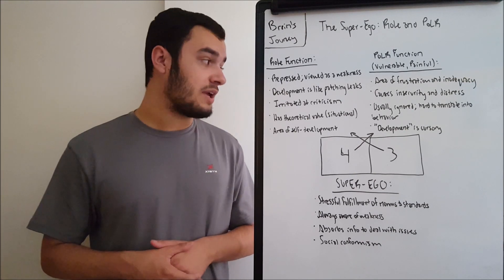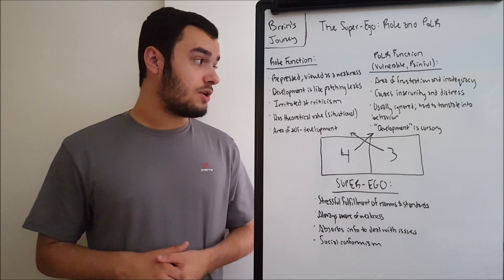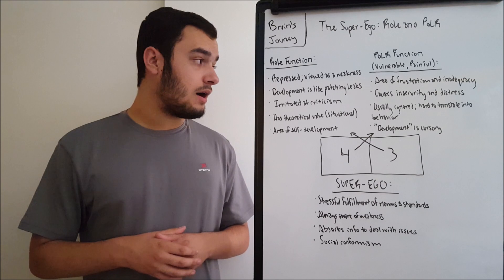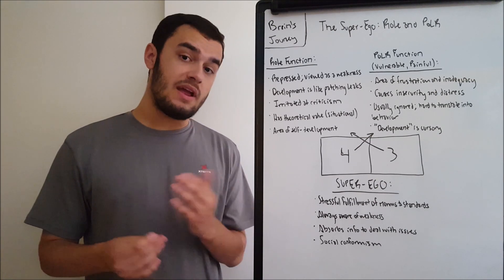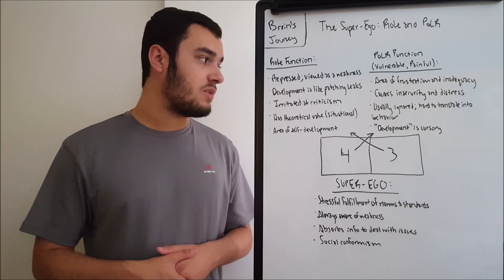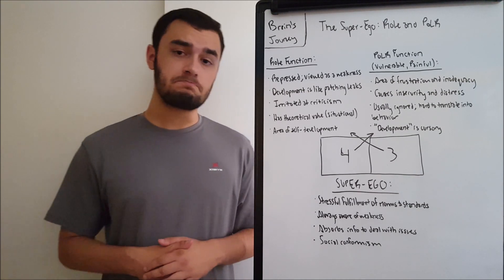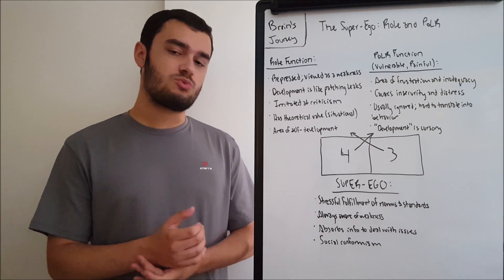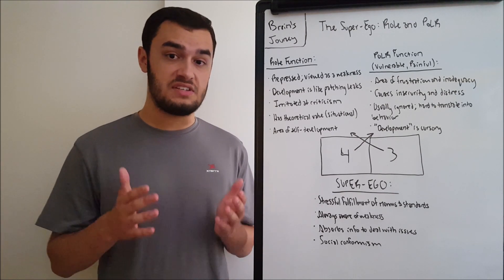It's repressed and viewed as a weakness — something that we need to overcome in order to get going in our lives. The role is like a personal chore, something that you have to tend to in order to have a stable life, but not something that you always want to tend to. Development of the role function is like patching a leak. Leaks pop up sporadically and you can fix them in the moment, but if you wait too long and you're not vigilant in scouting for problem areas, you'll end up with more leaks. It tends to be a problem area if you don't focus on it, but it does require effort and concentration.